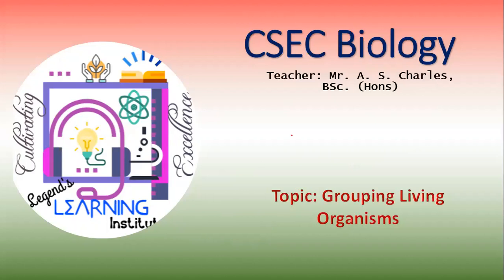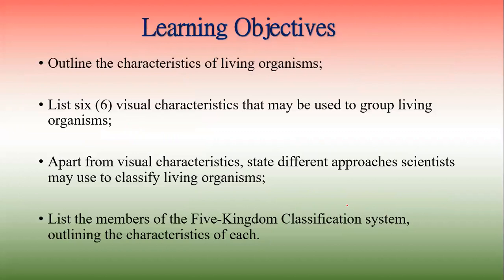Hi all. Welcome to CSEC Biology with Mr. Charles. Today we are looking at grouping living organisms. Our learning objectives are as follows: outline the characteristics of living organisms; list six visual characteristics that may be used to group living organisms; state different approaches scientists may use to classify living organisms; and list the members of the five kingdom classification system, outlining the characteristics of each.